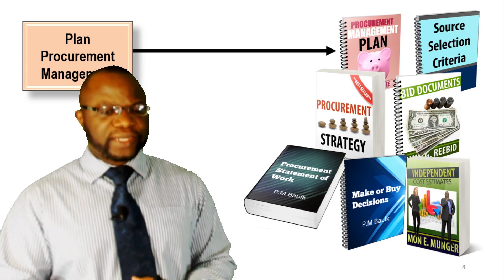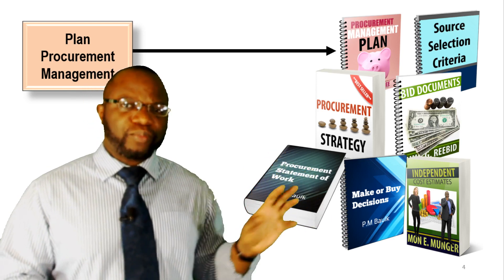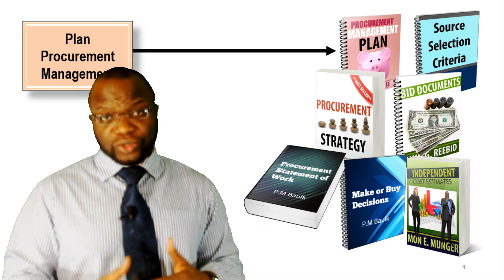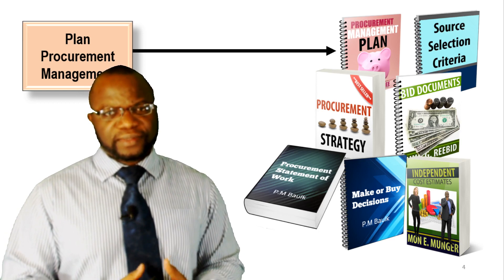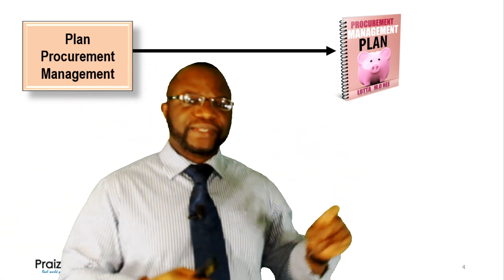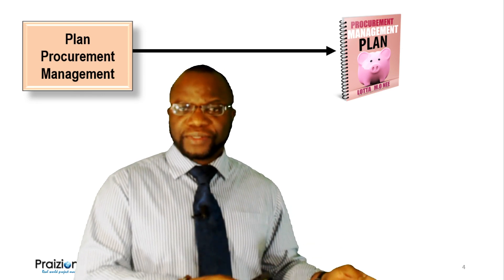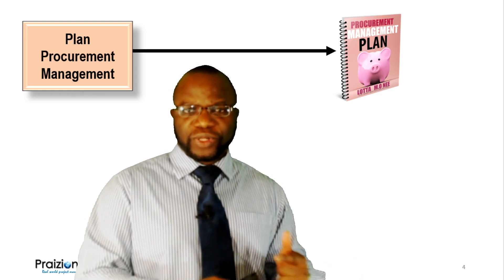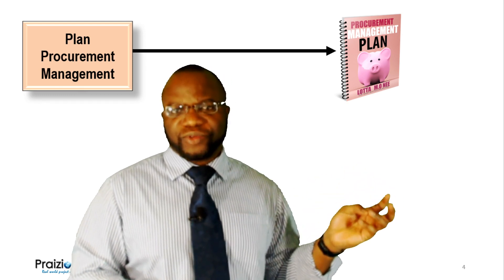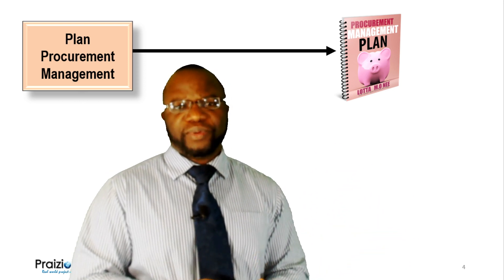And then we've got independent cost estimates. When you take a look at just the outputs, it could give you a run for your time as you go through the content. So a little introduction to each: the Procurement Management Plan is a plan for how to manage the procurements and the contracts that you will use — ultimately, how are we going to manage procurements on the project?